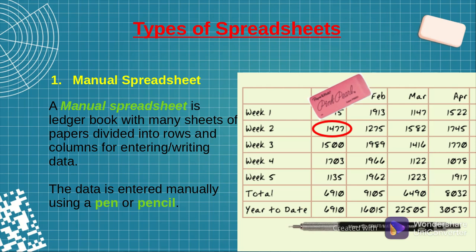In most cases, you discover that these manual spreadsheets are entered using pencils. Next time you get the chance, maybe you can visit the accounts clerk's office or the boss's office, and you can catch a glimpse of these manual spreadsheets. You'll discover that in most cases the entries are made with a pencil — I guess maybe so that they can be corrected easily if there is a mistake.